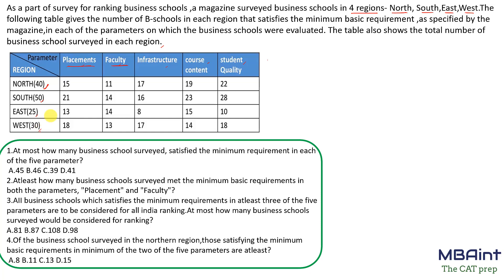The first question asks: at most how many business schools surveyed satisfied the minimum requirement in each of the five parameters? 'At most' means maximum — maximum how many business schools satisfied all five parameters. For the north region, the minimum number is 11. This is the maximum value that could satisfy all five parameters, because if we took 12, only 11 schools qualify for faculty. So the maximum value satisfying all five parameters equals the minimum value in each region.